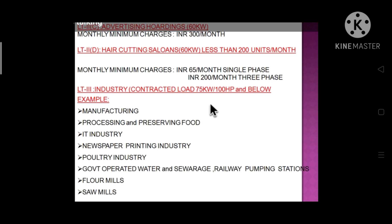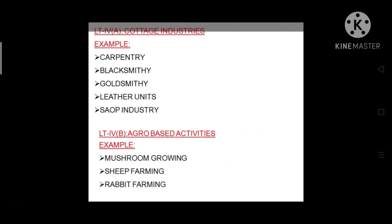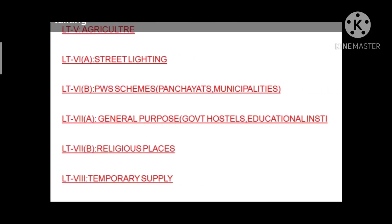LT3 category is controlled by SCERC — State Electricity Regulation Commission — and CERC — Central Electricity Regulation Commission. Coming to LT4, that covers cottage industries and agro-based activities. The fifth category is agriculture, the sixth is street lighting and general purpose, and government, hospital, and education systems all come under low tension tariff supply. There are a total of eight categories in low tension tariffs.